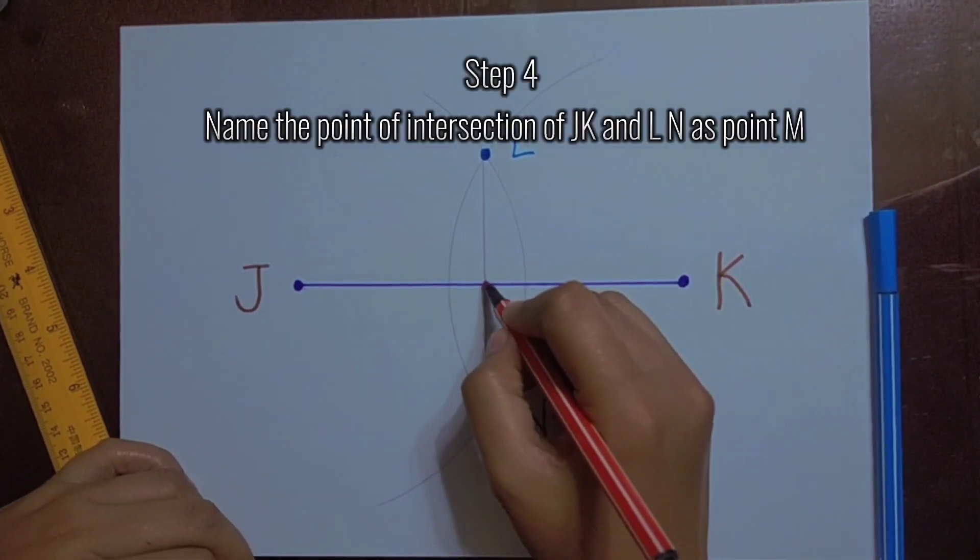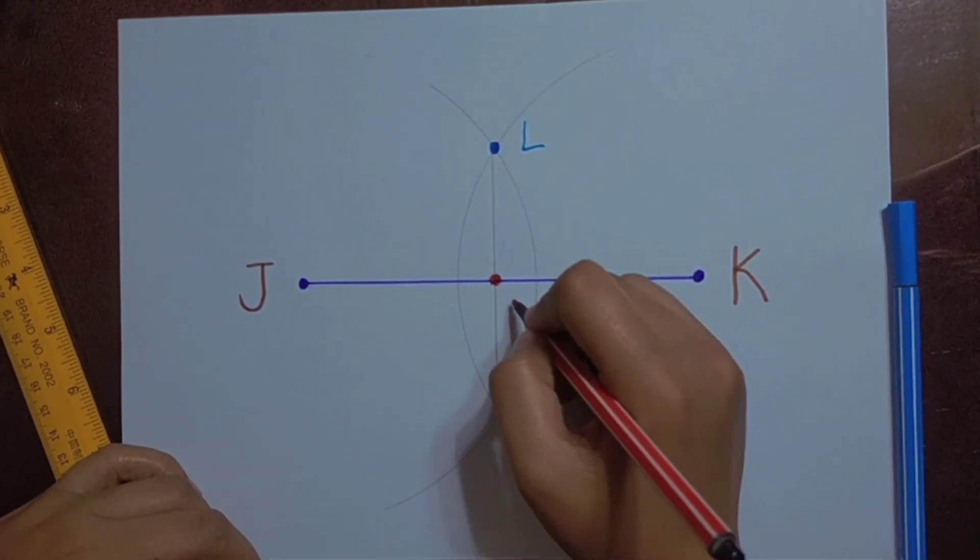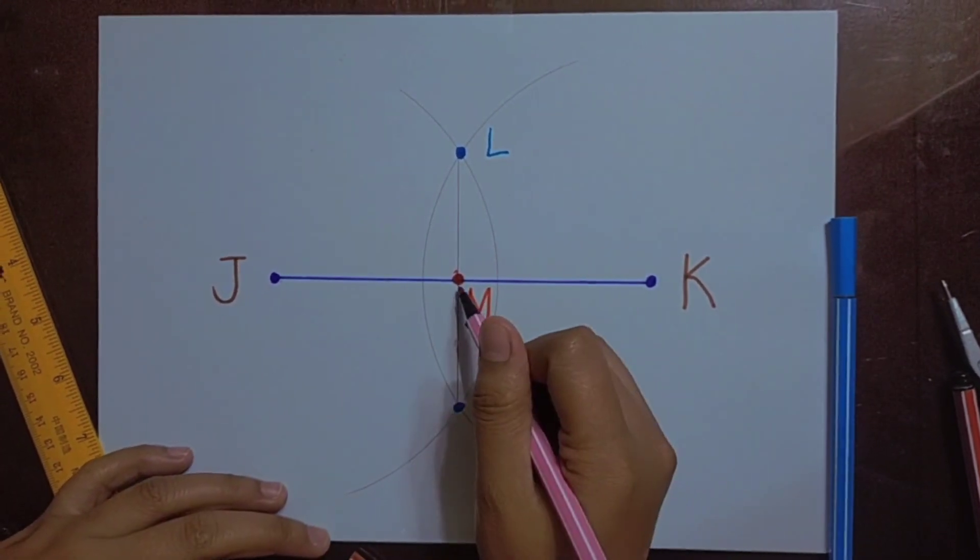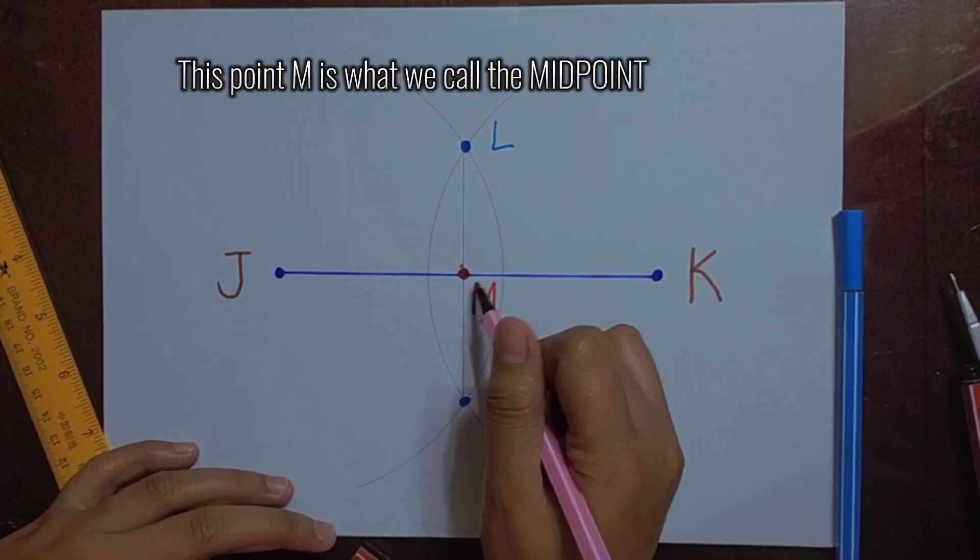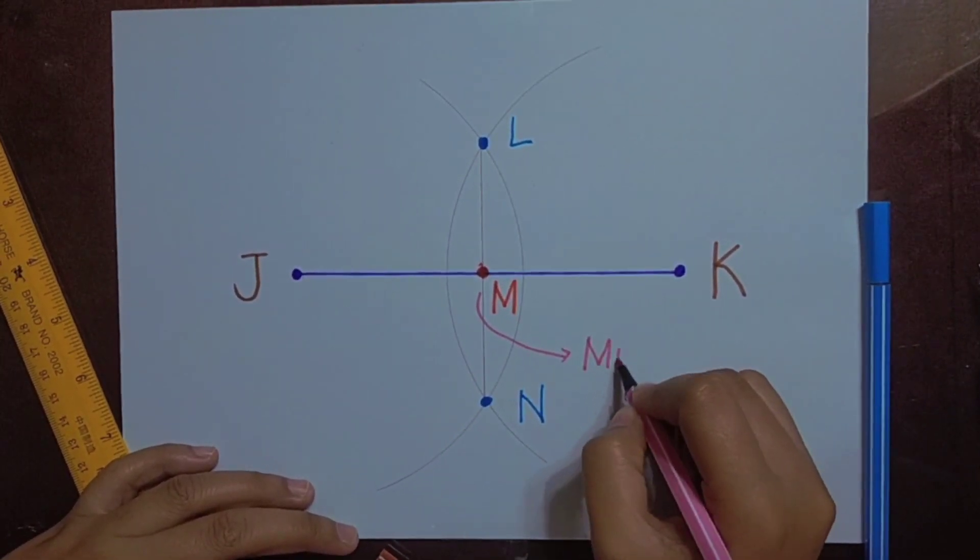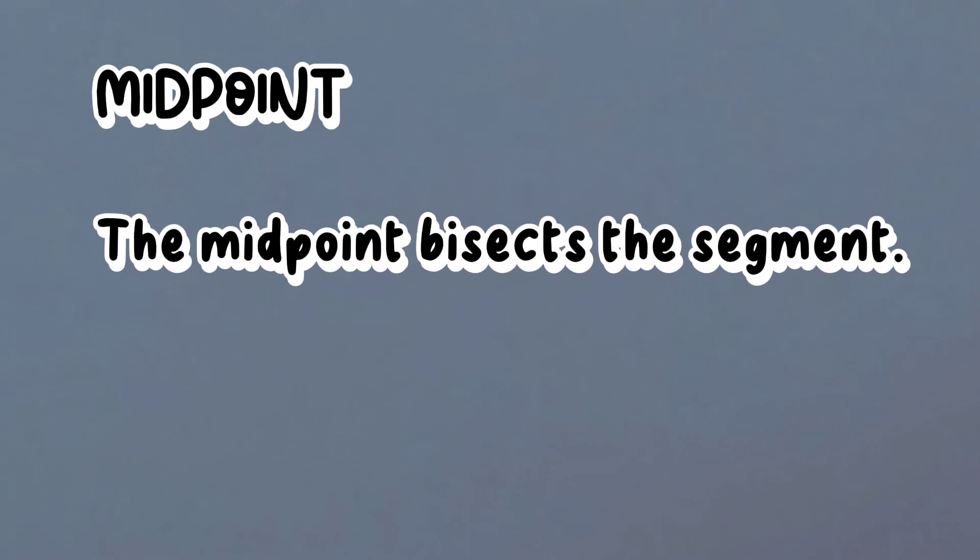Step 4. Name the point of intersection of JK and LN as point M. This point M is what we call the midpoint. The midpoint bisects the segment.